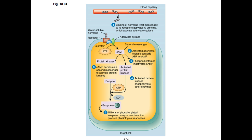The water-soluble hormones are a lot more complicated. There's no problem traveling through the bloodstream, but once the water-soluble hormone hits the phospholipid bilayer, which is lipid-based, it will not be able to go through it. So once it hits the receptor embedded in the cell membrane, that activates a G-protein on the other side. The G-protein activates an enzyme called adenylate cyclase, which takes ATP and turns it into something called cyclic AMP. Cyclic AMP is also known as the second messenger — the first messenger being the hormone itself.